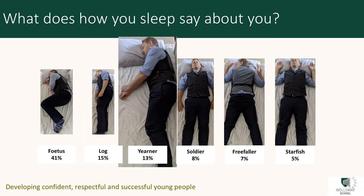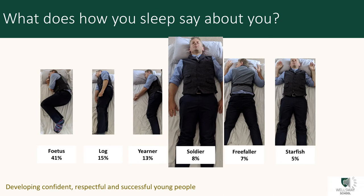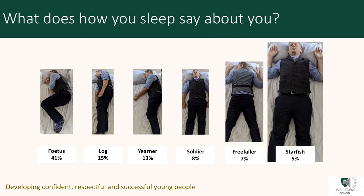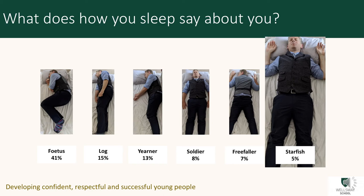The yearner — sleeping on your side with both arms out in front — these people have an open nature but can be suspicious and cynical. They're slow to make up their minds, but once they've taken a decision, they are unlikely ever to change it. The soldier — lying on your back with both arms pinned to your sides — these people are generally quiet and reserved, don't like a fuss, but set themselves and others high standards. The free-faller — lying on your front with hands around the pillow and head turned to one side — often gregarious and brash, but can be nervous and thin-skinned, disliking criticism and extreme situations. The starfish — lying on your back with both arms up around the pillow — these sleepers make good friends because they are always ready to listen and offer help when needed, and they generally don't like to be the centre of attention.